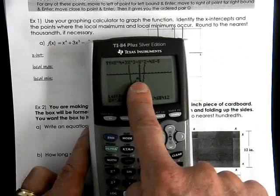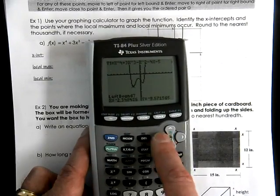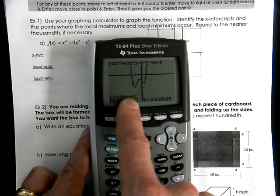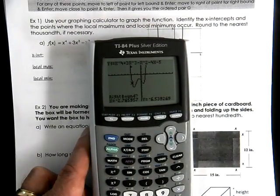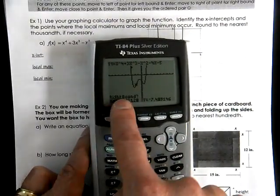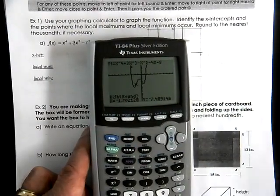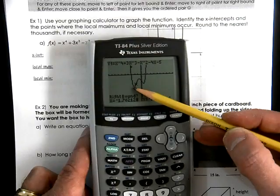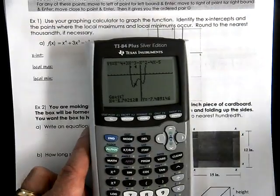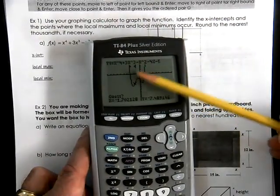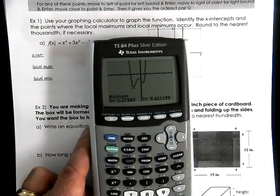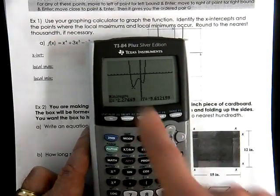Second trace. Minimum. We take this little cursor. Some people call it a spider. So we take the spider to the left bound, to the left of the answer we're looking for, and hit enter. Take the little spider using the keys to the right bound. How far to the right do you care to look? I just need to be past my answer. I know my answer is down here somewhere. And then it says guess. It only says guess in case you have two possible answers within that same range. So there's my answer. That's my lowest point.